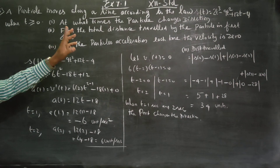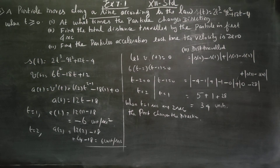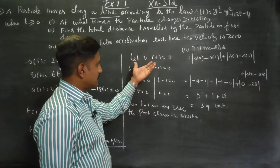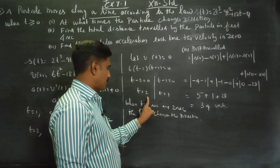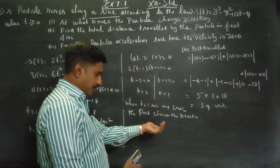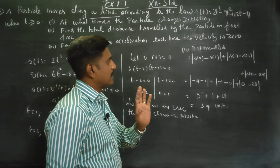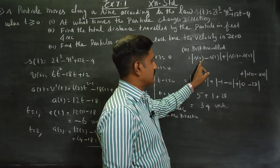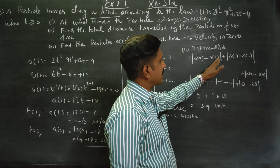The particle moves along the line according to the law. The first question is: at what time does the particle change direction? Direction changes at t equals 1 second and t equals 2 seconds.